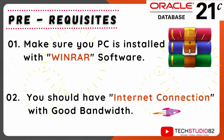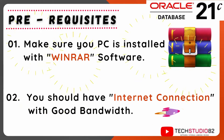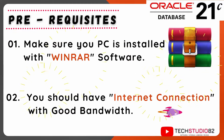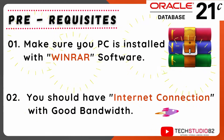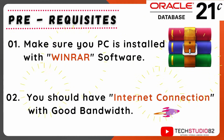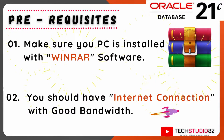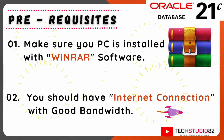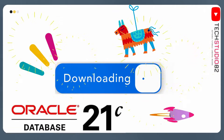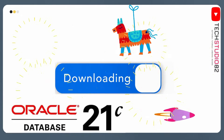Before moving to the first step, there are some prerequisites. Firstly, make sure your PC has WinRAR software installed. This software is required to extract the software zip files. And secondly, make sure you have an internet connection with good bandwidth in order to download the software file. Okay, then let's move on to the first step, which is the download.